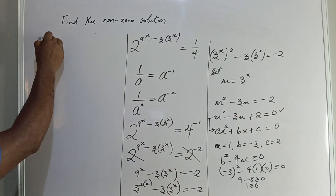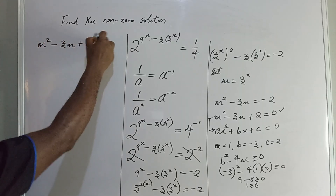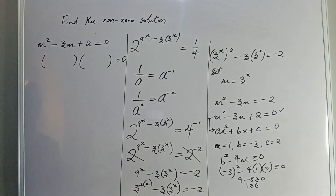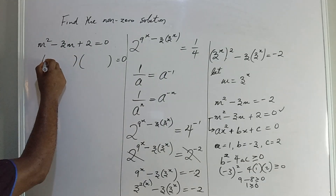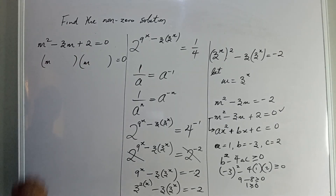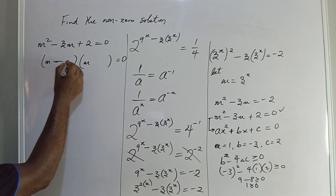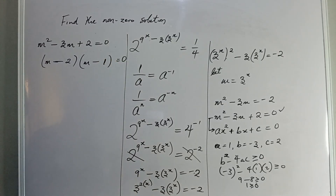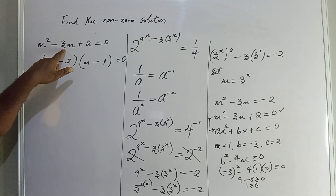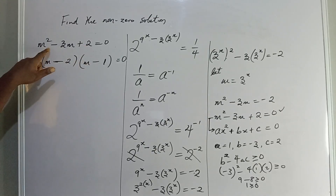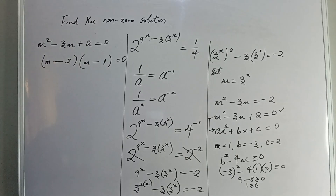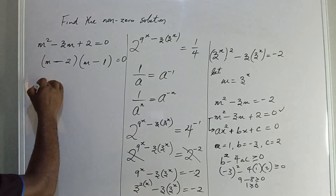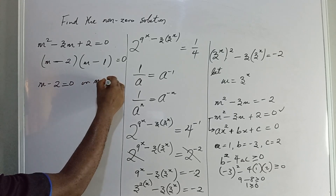So we have m squared minus 3m plus 2 equal to 0. We need two numbers that give a sum of minus 3 and a product of plus 2. Those two numbers are minus 2 and minus 1. So from here we have m minus 2 equal to 0 or m minus 1 equal to 0, giving us m equal to 2 or m equal to 1.